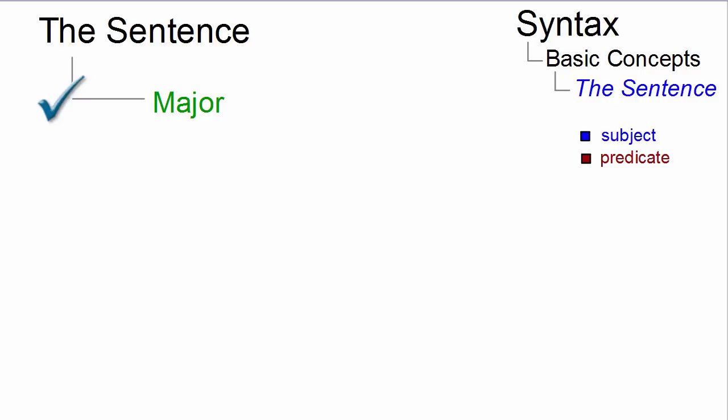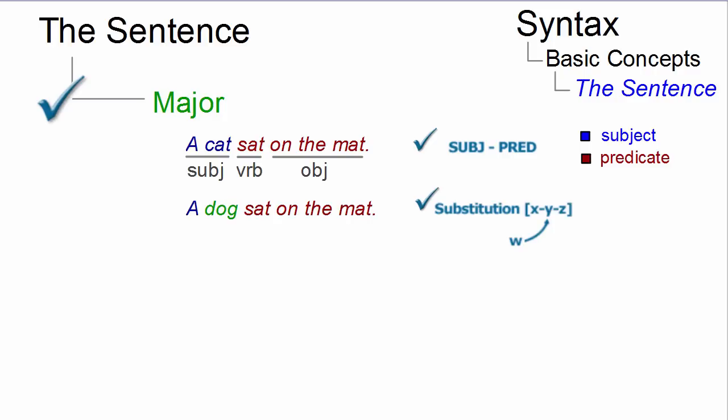Major sentences have a fully developed subject-predicate structure, as in 'a cat sat on the mat,' where 'a cat' is the subject and 'sat on the mat' the predicate. The predicate in turn consists of a verb and an object. Major sentences allow operations such as substitution or transformation.